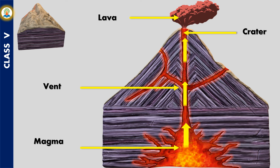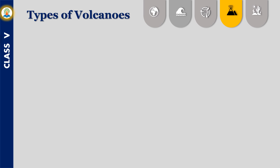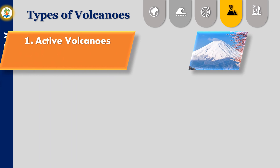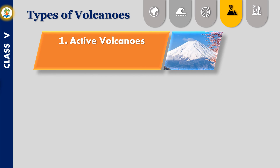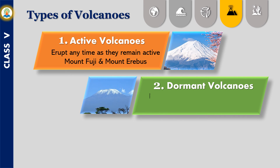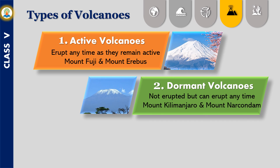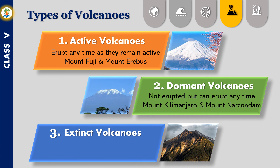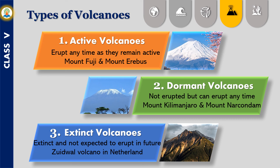The magma that reaches the earth's surface is called lava. As the lava cools, it solidifies and forms rocks. Active volcanoes erupt any time as they remain active — for example, Mount Fuji and Mount Terribus. Dormant volcanoes have not erupted for several years but can erupt any time — for example, Mount Kilimanjaro in Tanzania and Mount Narkondam in the Andamans. Extinct volcanoes are not expected to erupt in the future — for example, the Zeetwal volcano in the Netherlands.